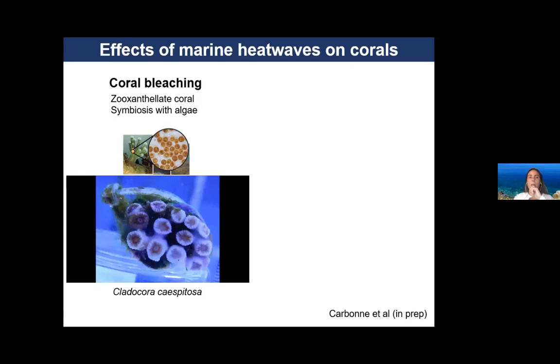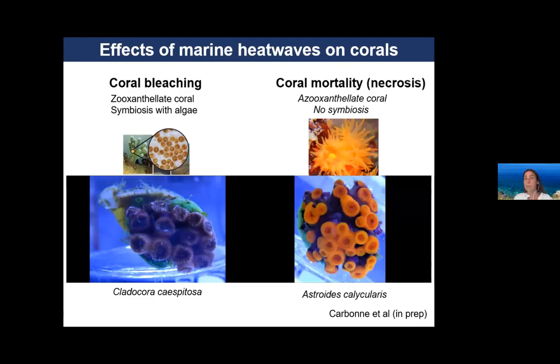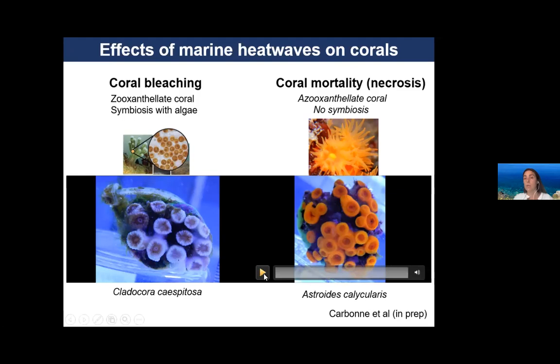Most tropical corals have this symbiotic relationship with algae. However, in the Mediterranean Sea there are also corals that don't have this symbiosis with microalgae — they are called azooxanthellate corals. When these corals are stressed, they lose the tissue, creating a necrosis and partial mortality. I am showing footage of the coral Astroides calycularis submitted to a marine heat wave — you will see the polyps turning white due to loss of tissue.